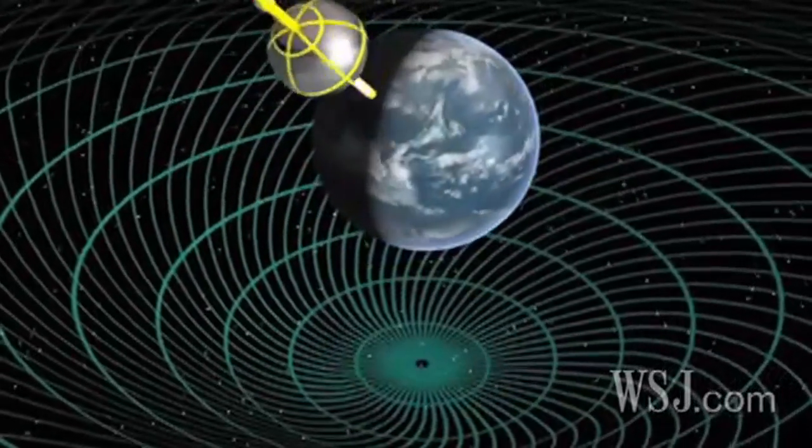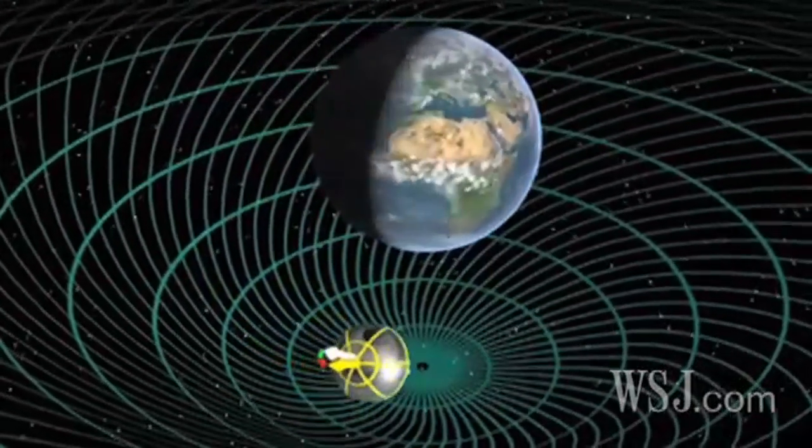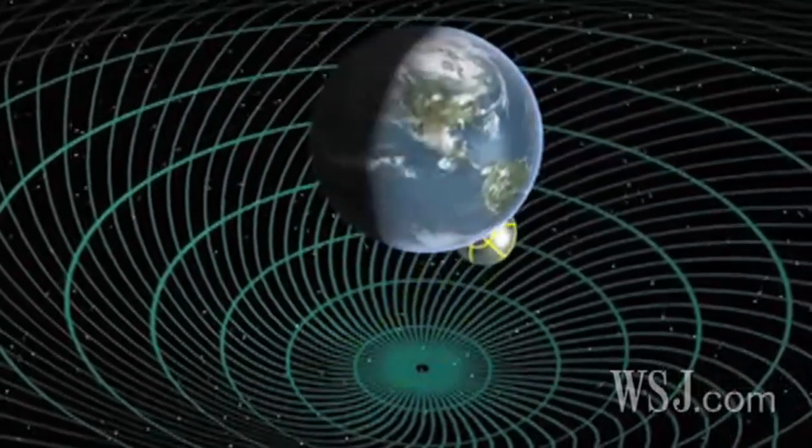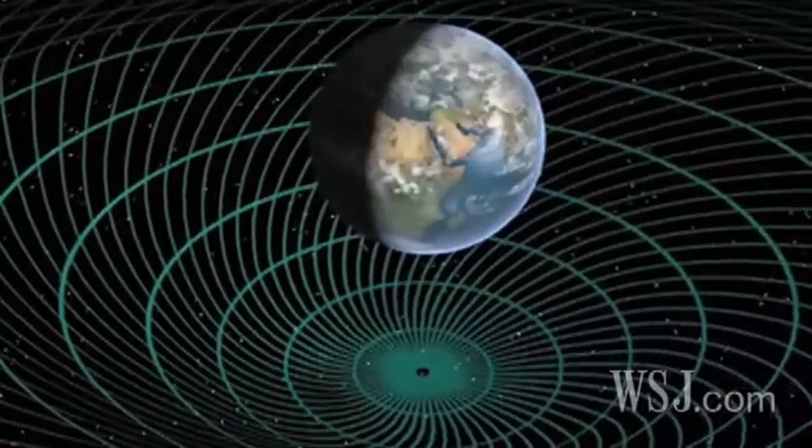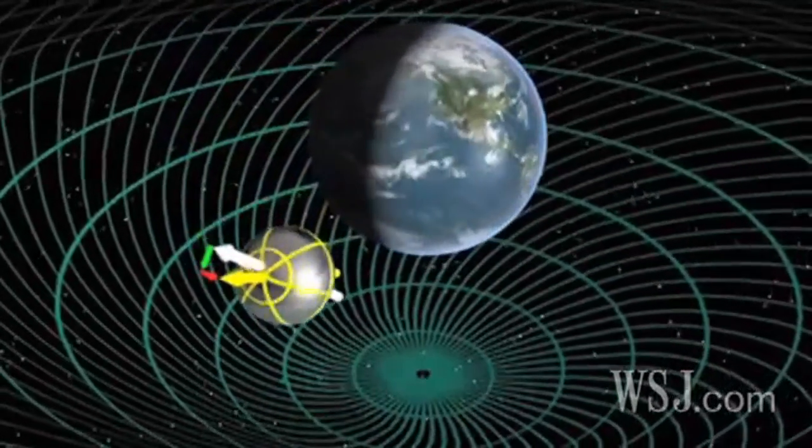three Stanford University professors designed an exotic orbital experiment in which they used gyroscopes in space to measure how Earth's mass distorts the fabric of space-time and pulls at objects orbiting the planet.